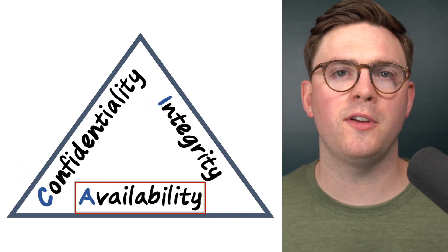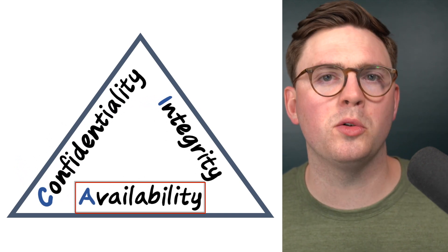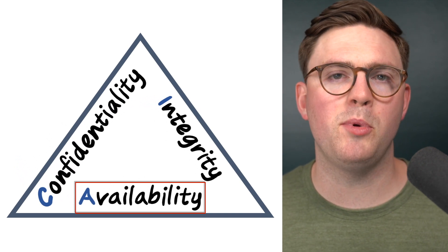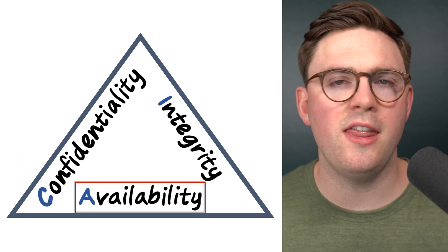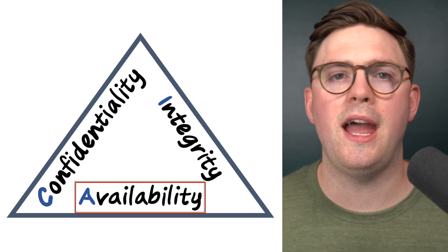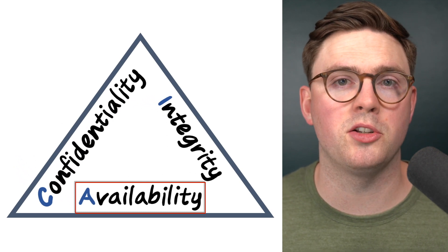You have to think about the software side but also the physical side of what it takes to keep your environment available, including things like disaster recovery in case anything happens to your production environment. Those are the three things to think about: confidentiality, integrity, and availability.